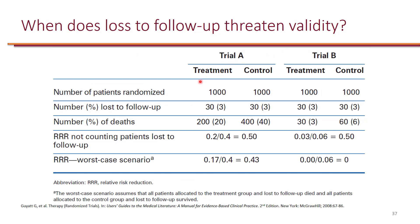Imagine we have two trials. Both have a treatment group and a control group with a thousand patients each, and both had the same number lost to follow-up — 30 patients in each group. The primary endpoint in these two studies is mortality. In Trial A, a lot of people died: 200 in the treatment group and 400 in the control group, leading to a 50% relative risk reduction.